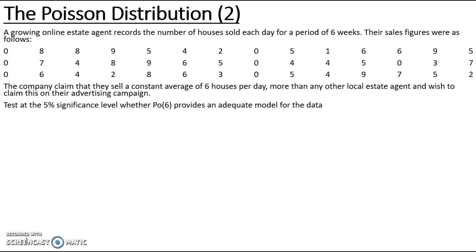Test at the 5% significance level whether Po(6) provides an adequate model for the data. It does specify that it wants us to use the Poisson distribution where it says whether Po(6) provides an adequate model, but the fact that they have used the terminology 'a constant average of 6 houses per day' is more of the clue.